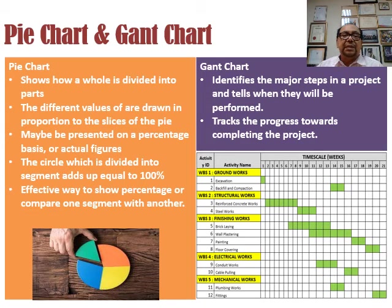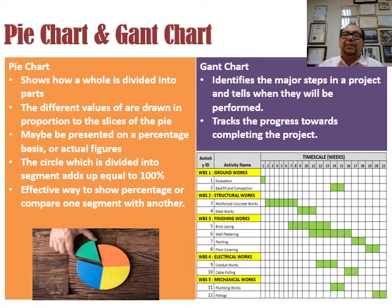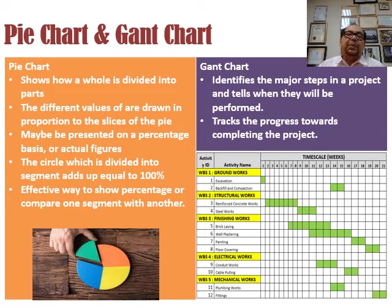Gantt chart: used to identify the major steps in a project and when they will be performed. It's used normally for project management — for example, building construction. How many months to start the foundation, how many to start the first floor, how many for the third floor. That chart is called a Gantt chart. It is more useful for project implementation purposes, not so much for reporting purposes.